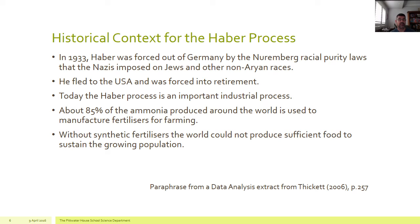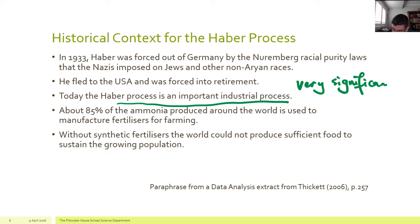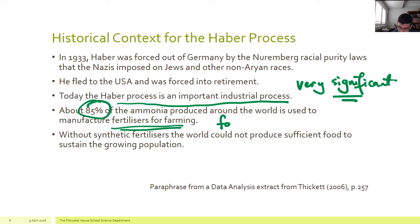The important takeaway is that the Haber process is an extremely important industrial process — it is very significant — and when you're making a judgment call, you must include that statement. Around 85% of the ammonia produced worldwide is used to manufacture fertilizers for farming, linking directly to food, one of our most basic requirements. You can make an even bolder concluding statement: without synthetic fertilizers, the world could not produce sufficient food to sustain its growing population.